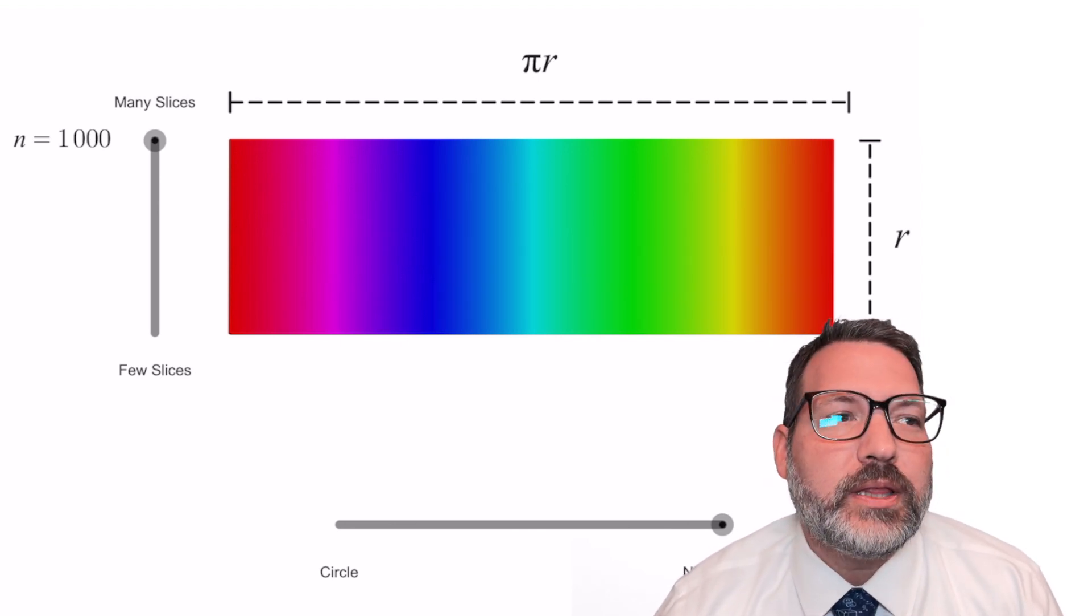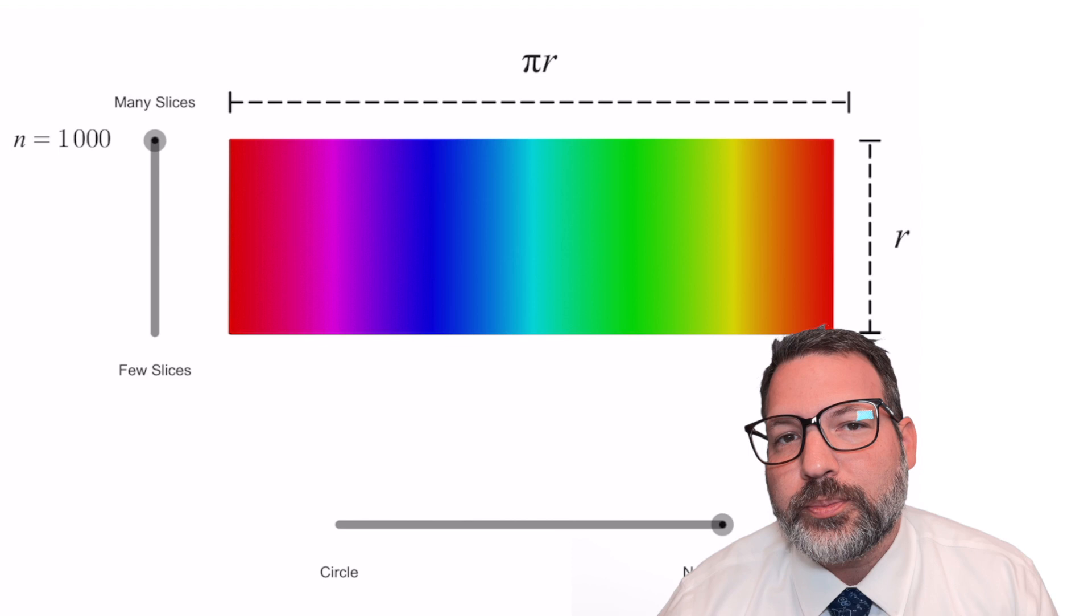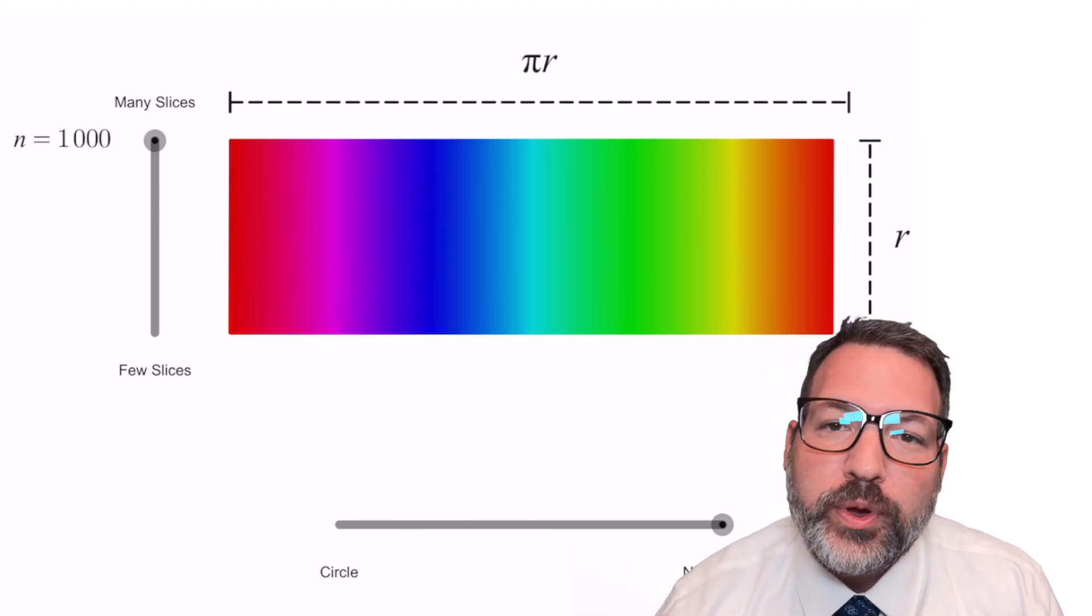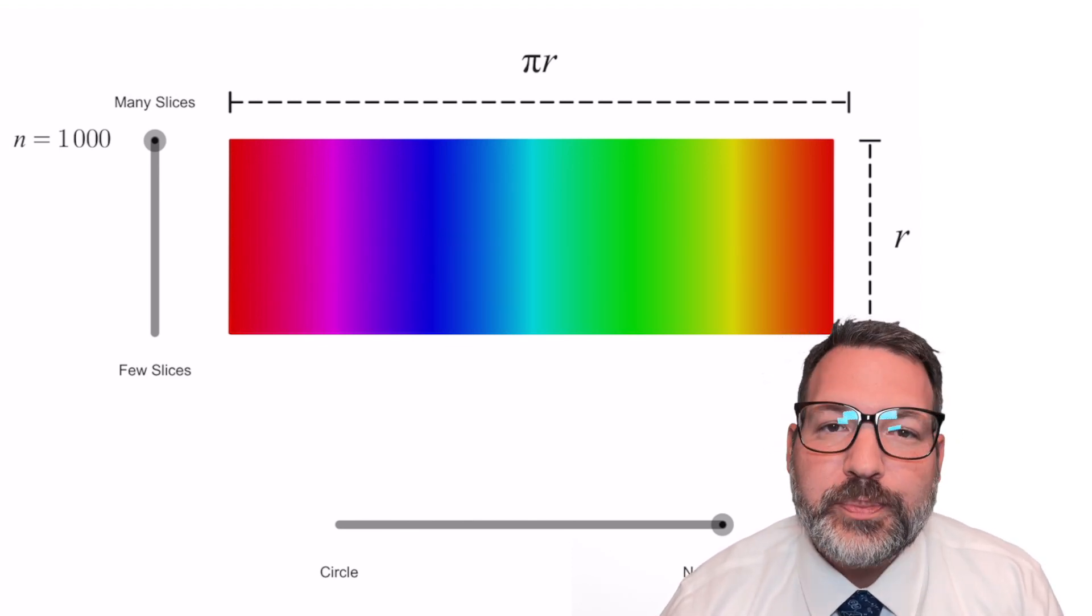Okay, this truly is describing the object itself. It's not just an approximation anymore, and therefore we can say the area of a circle is πr².